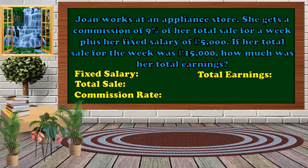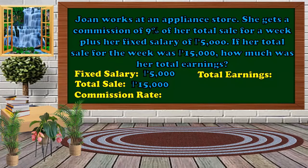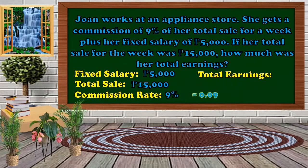The fixed salary is 5,000 pesos. The total sale is 15,000 pesos. The commission rate is the percent, which is 9%. We need to convert this into its decimal form by dividing by 100%, so the result is 0.09. That is what we're going to use in solving later.